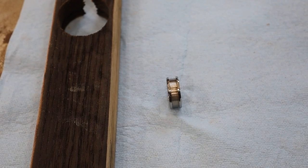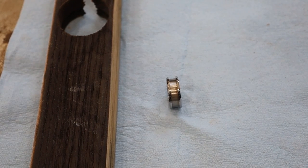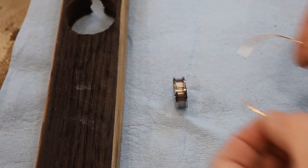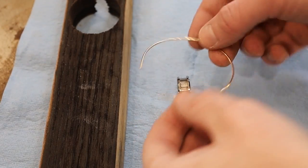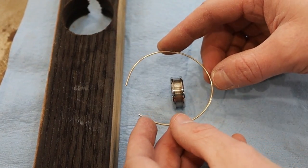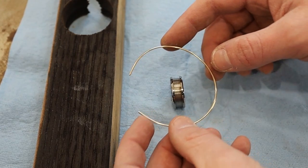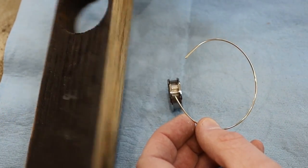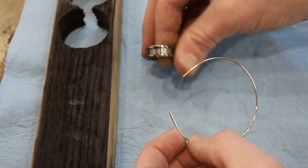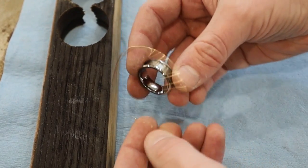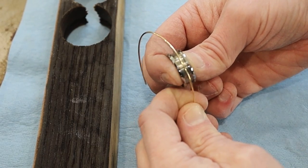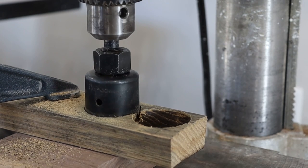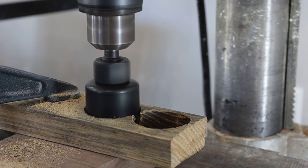First up are our supplies. We have an eight millimeter tungsten band with a five millimeter inlay, dead soft one millimeter wire gold, I believe that's 14 karat gold, and then whiskey barrel wood or oak. This wire is one millimeter, I think it's 18 gauge.